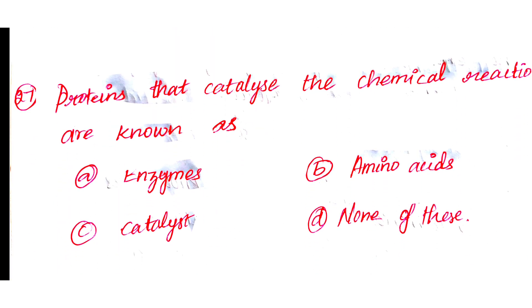Question number 27: Proteins that catalyze chemical reactions are known as. Option A: Enzymes. Option B: Amino acids. Option C: Catalyst. Option D: None of this. The answer is Option A: Enzymes.